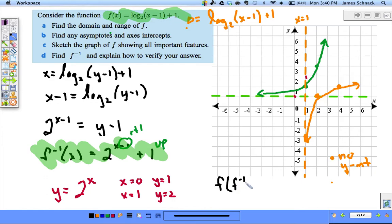We need to do a function composition and show that that equals X. And we show that the composition the other way is also equal to X. If those things are both equal to X, we have verified the inverses.